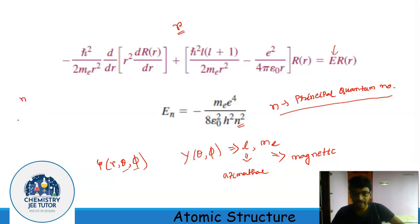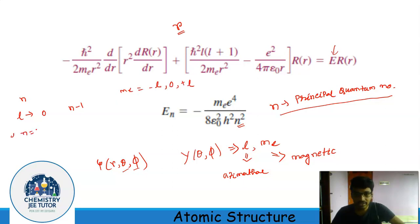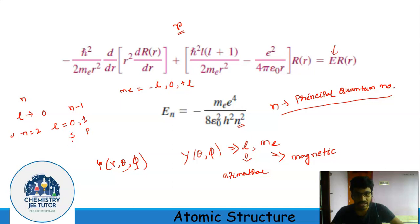When we impose the boundary conditions, we get the range of possible values of L and M_L. For a particular value of n, L can have values from 0 to n−1. When L is 0, that is called the s orbital, and when L is 1, that is called the p orbital. For n = 2, only two kinds of orbitals are possible: s and p. But for n = 3, L can have values 0, 1, and 2, giving us three orbitals: s, p, and d.